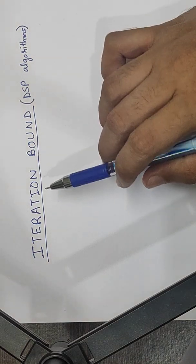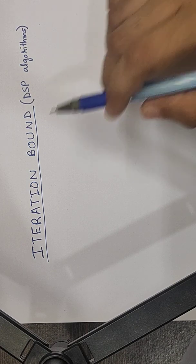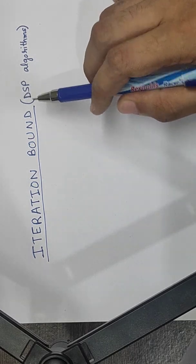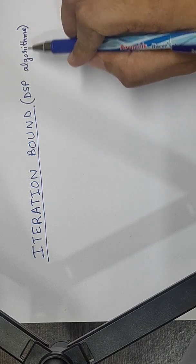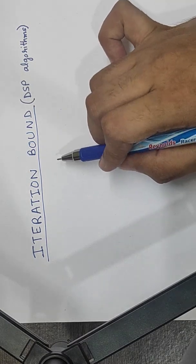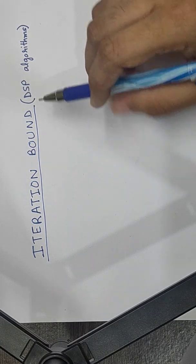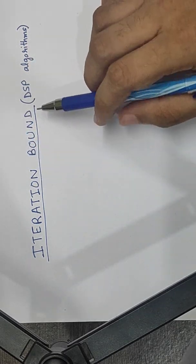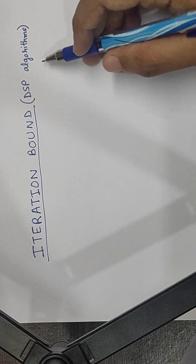This bound is referred to as the iteration period bound or simply the iteration bound. It's a characteristic of the algorithm. This characteristic doesn't change with the inputs to the algorithm or the outputs or how exactly the algorithm is being implemented in hardware. This is the fundamental lower bound of the algorithm and we cannot achieve an iteration period lower than this even if we had infinite processors available to us.